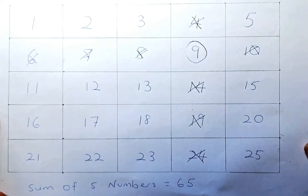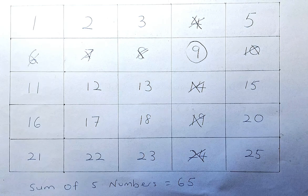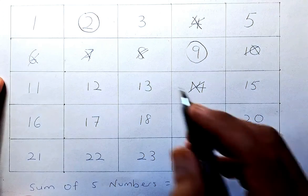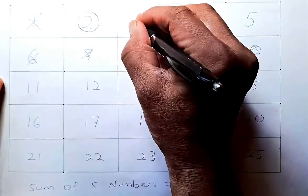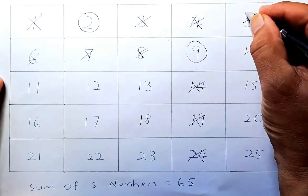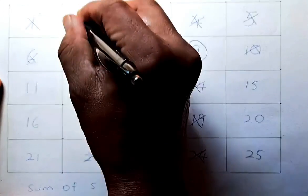So now you need to choose the second number. Choose any number you like. So suppose we choose number 2. Then the following numbers cannot be chosen. So 1 is out because they are in the same row, 3 is out, 5 is out, 12 is out, 17 out, 22 out because they are in the same column.